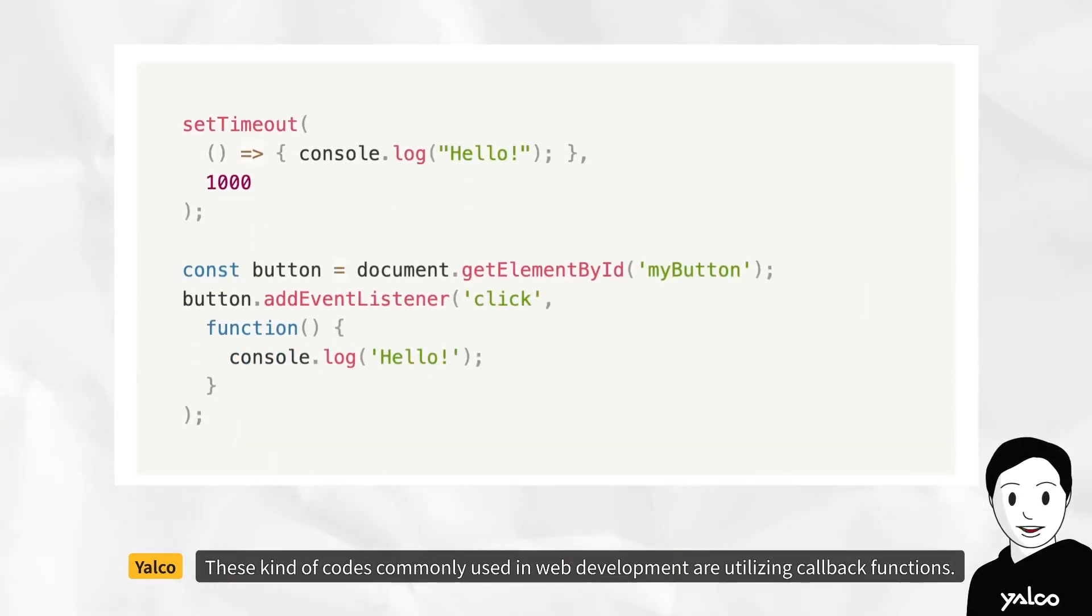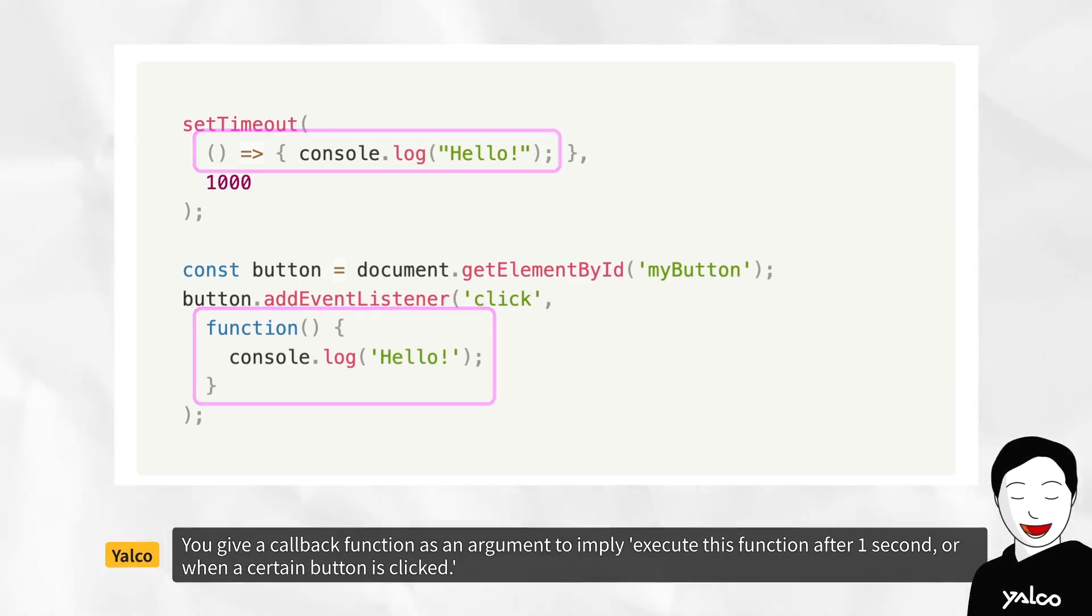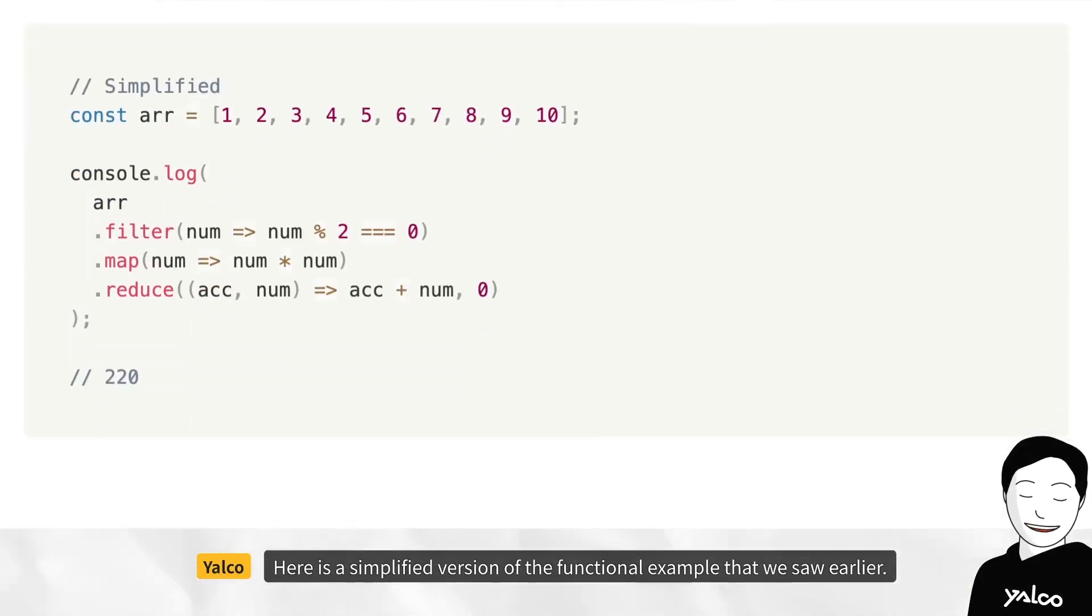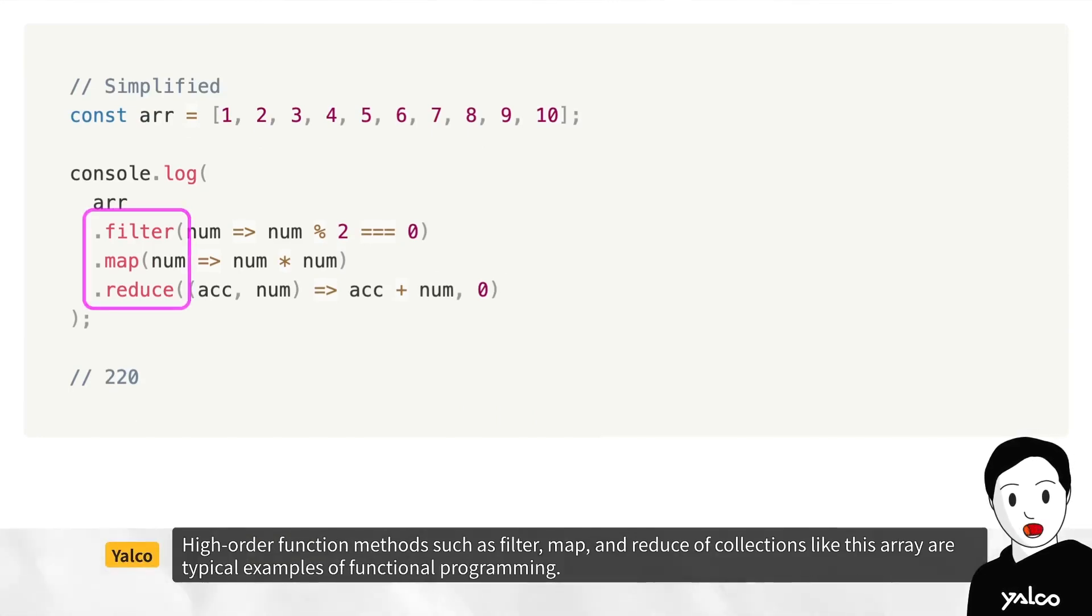These kind of codes that we often see in web development are utilizing callback functions. You give a callback function as an argument to imply, execute this function after one second, or when a certain button is clicked. Here is a simplified version of the functional example that we saw earlier.